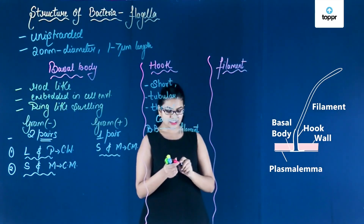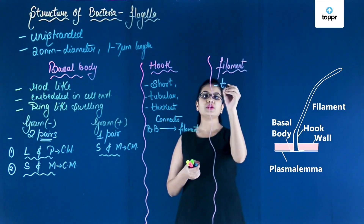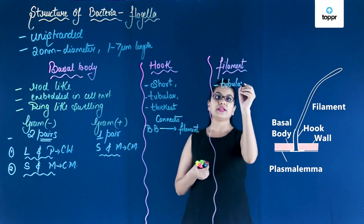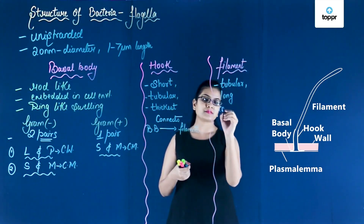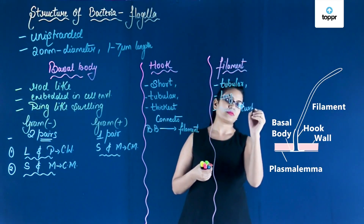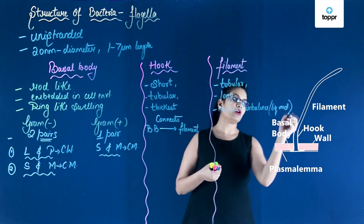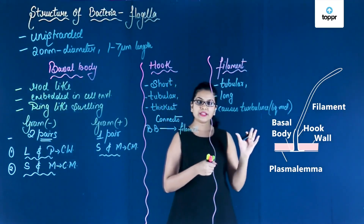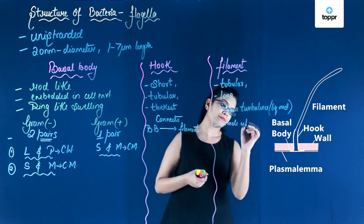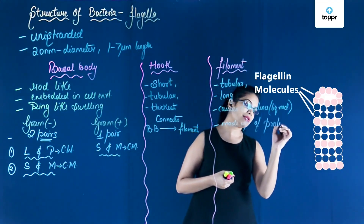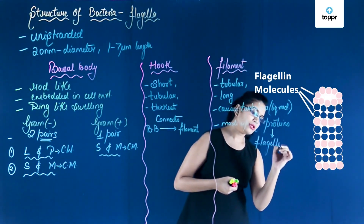Next, we will learn about the filament. The filament is tubular but long. This long tubular structure causes turbulence in the liquid medium. The filament is made up of proteins — some special proteins called flagellin.